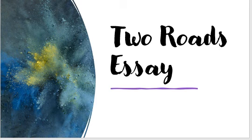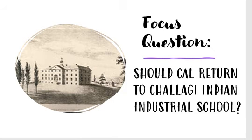This video will walk you through how to write your Two Roads essay. Our focus question that we are answering in this essay is: should Cal return to Chilagy Industrial School? Remember, at the end of the book he was making the decision if he should go or not go, and in this paper you are going to take a position — yes, he should return to Chilagy Industrial School, or no, he should not.